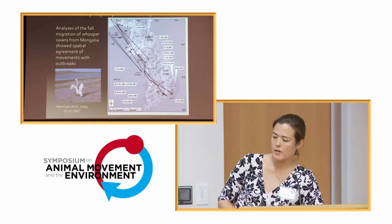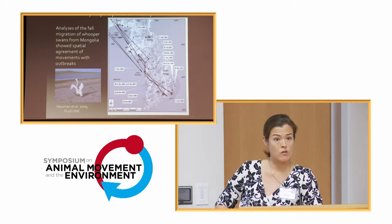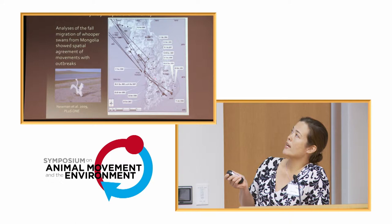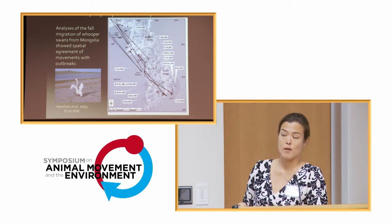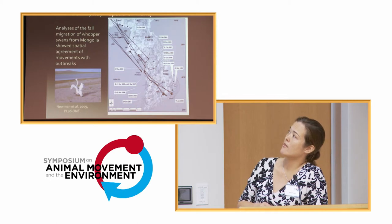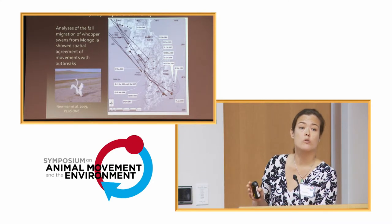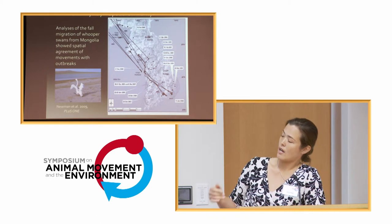One of the early studies that came out by Newman involved whooper swans that were marked in Mongolia during their molting period, before their southern migration. Looking at track overlays of the birds coming down from Mongolia, overlaid with H5N1 outbreaks in South Korea with buffers around them, we can see a pretty clear spatial overlap between the whooper swans and the outbreaks. However, if you look more closely at the timing, the outbreaks actually preceded the arrival of the whooper swans as they entered their wintering grounds.